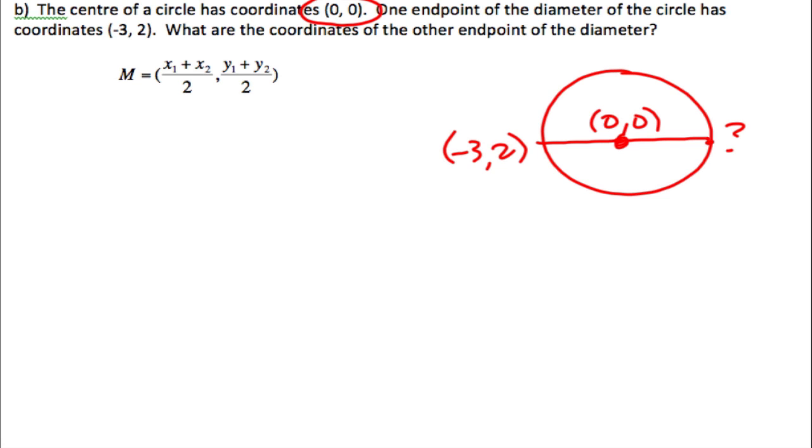So there's not any values. We could call this A. We could call this B. And maybe that M for midpoint. So the same thing is going to happen. I'm going to sub in my information. The midpoint is 0, 0. I know X1 is negative 3. And I don't know X2. I know Y1 is 2, but I don't know the other Y value.